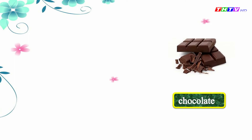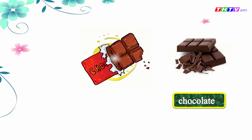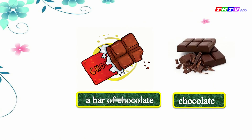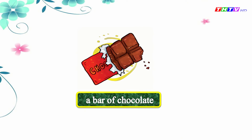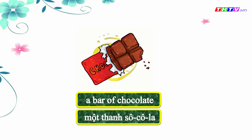Next one. Chocolate. Look. A bar of chocolate. Listen and repeat. A bar of chocolate. A bar of chocolate means một thanh chô-cô-la.